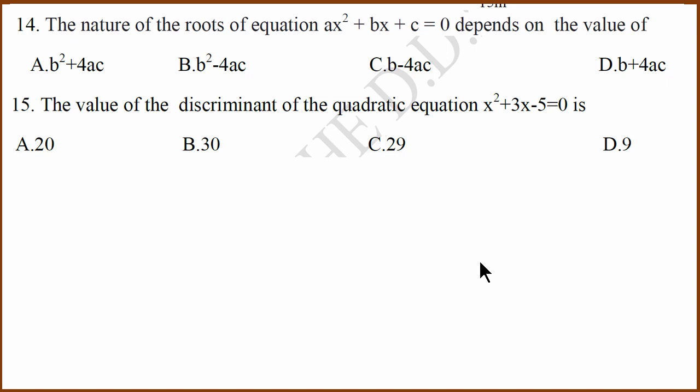14th and 15th questions are quadratic equation questions. The nature of the roots depend on discriminant, and discriminant is b square minus 4ac. What's the value of the discriminant? It's b square minus 4ac. b is 3, so 3 square. 4ac is 4 multiplied by 1 multiplied by minus 5, which becomes 20. 20 plus 9 is 29.